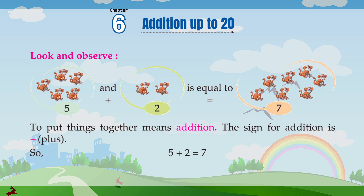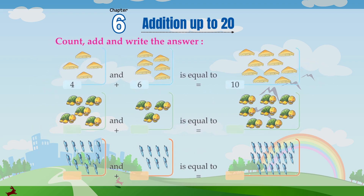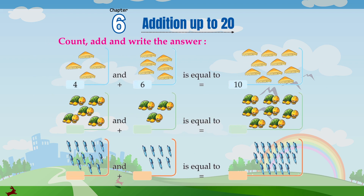So, 5 plus 2 is equal to 7. Count, add and write the answer.